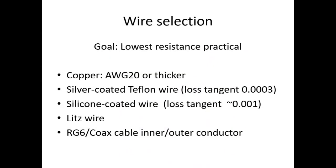Wire selection: our goal for this is the lowest resistance practical. Ideally we want zero ohms, but then we've got a cable that weighs 400 pounds and costs $20,000. A good starting point is AWG20 or thicker copper magnet wire. If you're trying to go better and do the Rolls-Royce coil, you can do silver-coated Teflon wire with loss tangent 0.0003, silicone-coated wire with loss tangent around 0.001. Litz wire, which is the multi-strand copper wire, tends to have really good characteristics. One of the things Dollard used back in the Borderlands videos was the outer conductor of RG6 coax cable because it has a very large diameter and works really good for making coils.